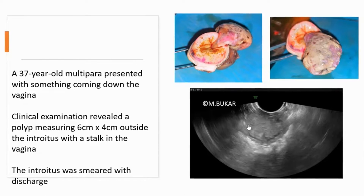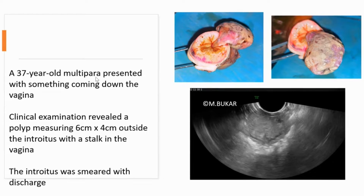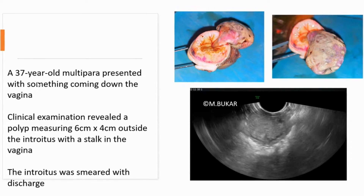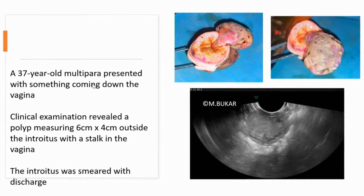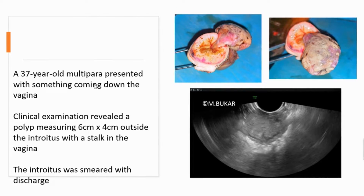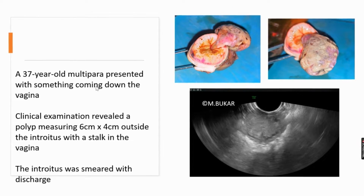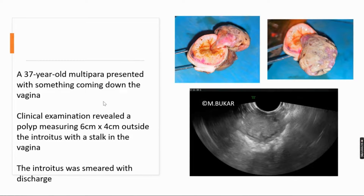These images are of a 37-year-old multipara who presented with something coming down the vagina. On examination, a polyp smeared with discharge was observed outside the introitus.